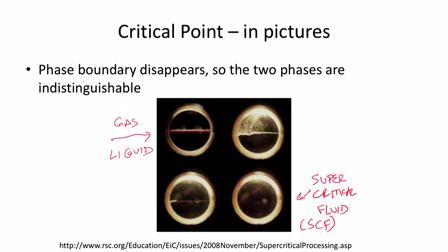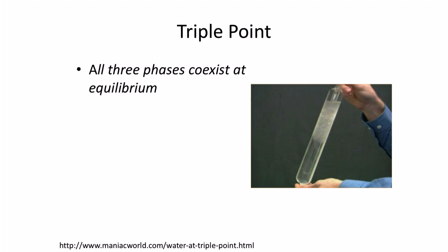There's another point that's of interest in the phase diagram, which is called the triple point. So what happens at the triple point is all three phases can coexist at equilibrium, which basically means I have solid, liquid, and gas all present in my sample at the exact same time.